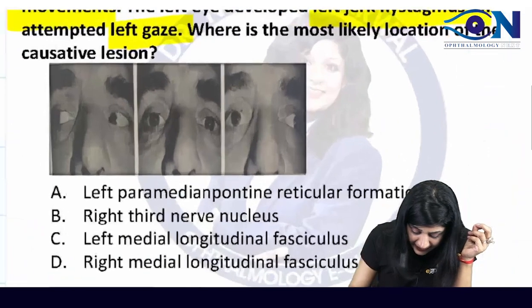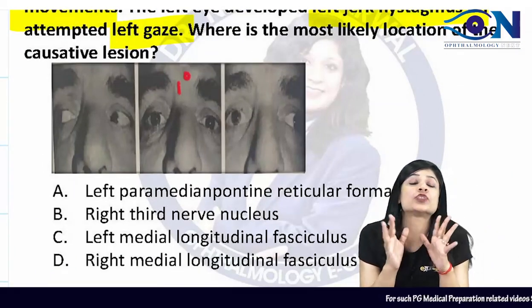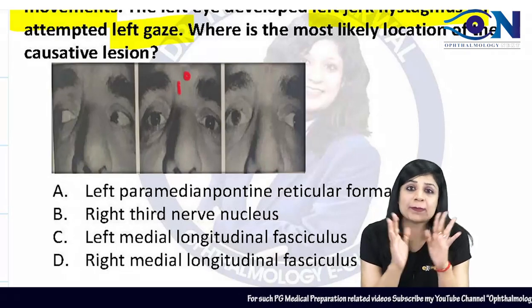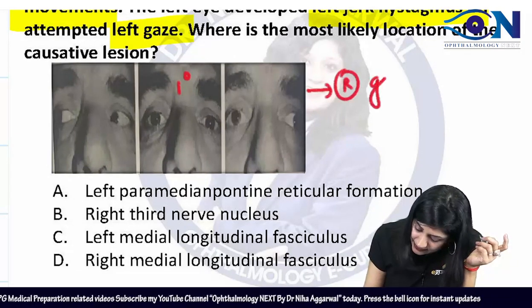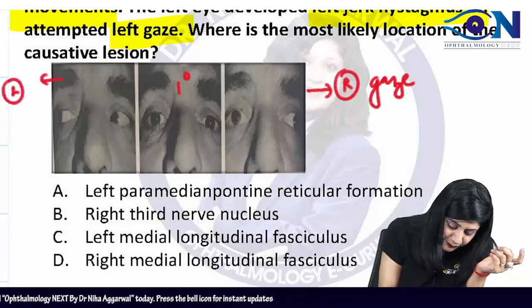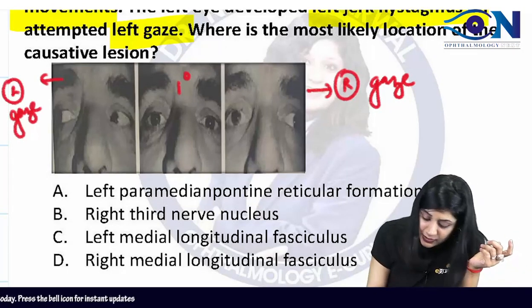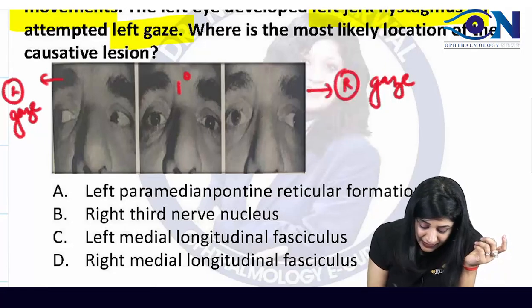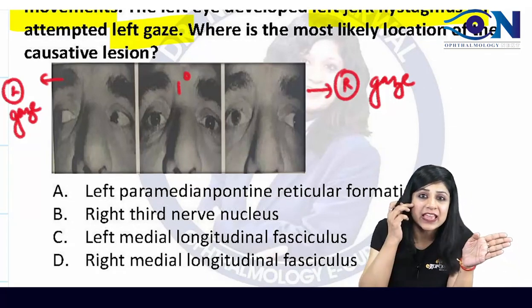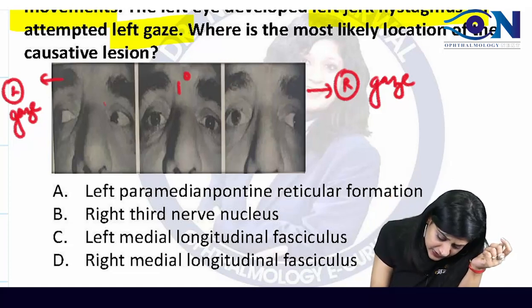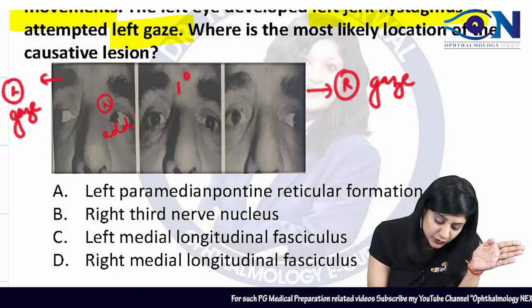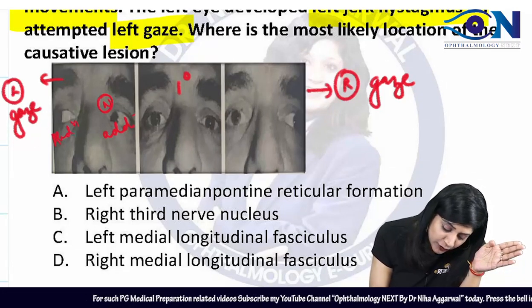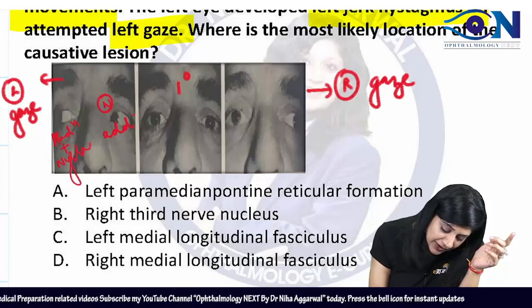Try to understand — this is your primary position where they are not showing any problem. This is the right gaze and this is the left gaze. When the patient is trying to see in the left gaze, this is the normal adduction that is taking place while the eye is going into the left part. So we have abduction and along with this we have nystagmus — so we have abduction nystagmus.